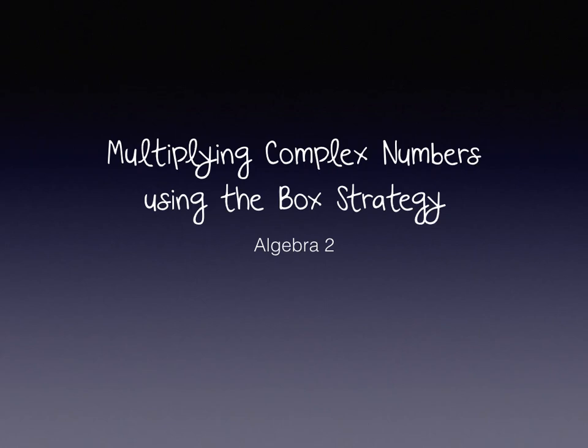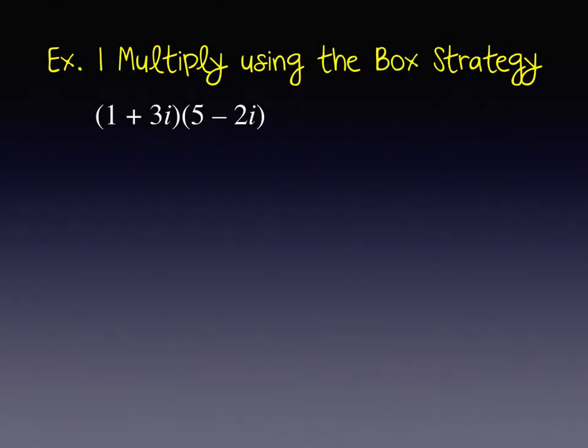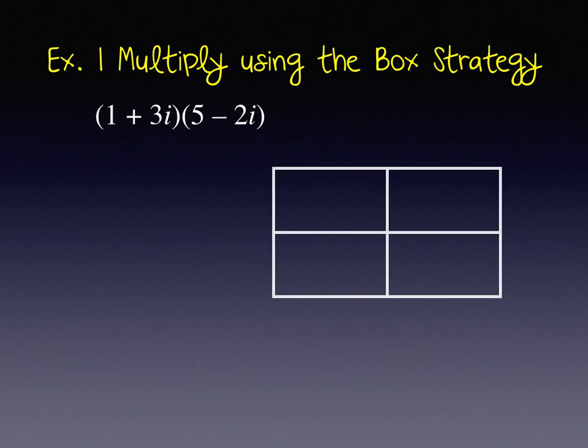Multiplying complex numbers using the box strategy. The numbers we'll be multiplying in example one are 1 plus 3i times 5 minus 2i. We are multiplying two complex numbers together using this strategy. We'll write the first factor along the side and the second factor along the top, and we'll multiply 5 times 1 to get 5 in this cell.